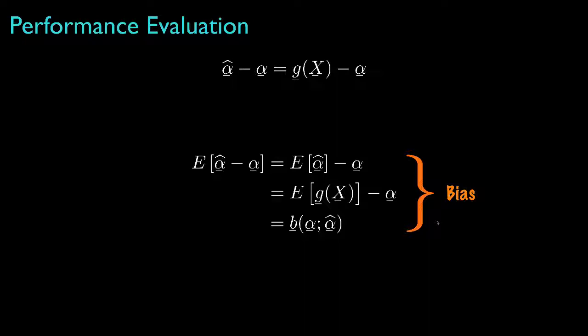When the bias is equal to zero, we say that the estimator is unbiased; otherwise, we say that it is biased.